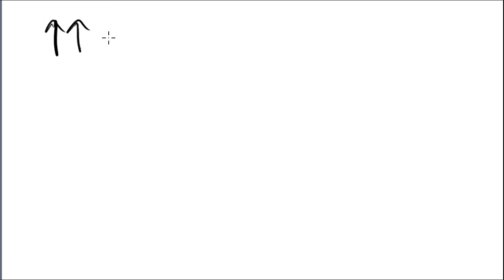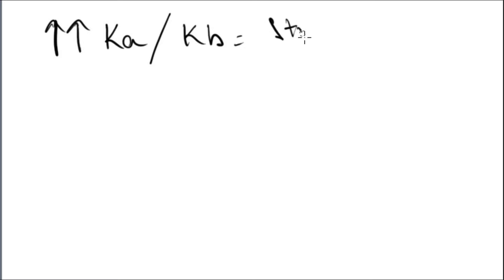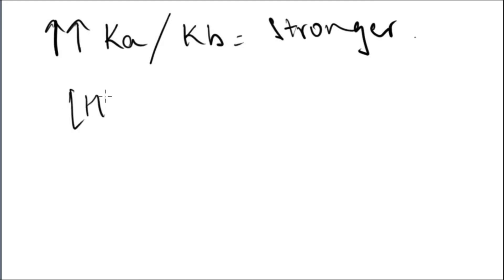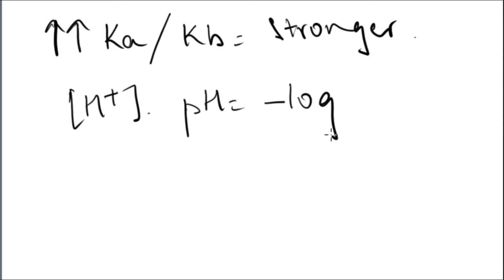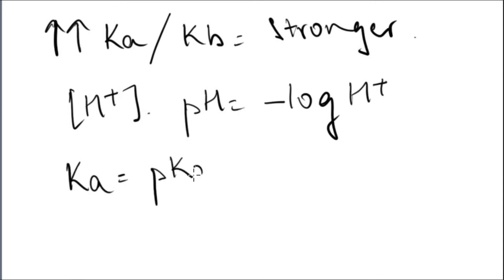The relationship is that the greater the constants Ka or Kb, the stronger the acid or the base. Just like we have a concentration of hydrogen and then pH, whenever you have p, pH becomes the minus logarithm of the concentration of hydrogen. The same way, when you have Ka you have pKa, and when you have Kb you have pKb.